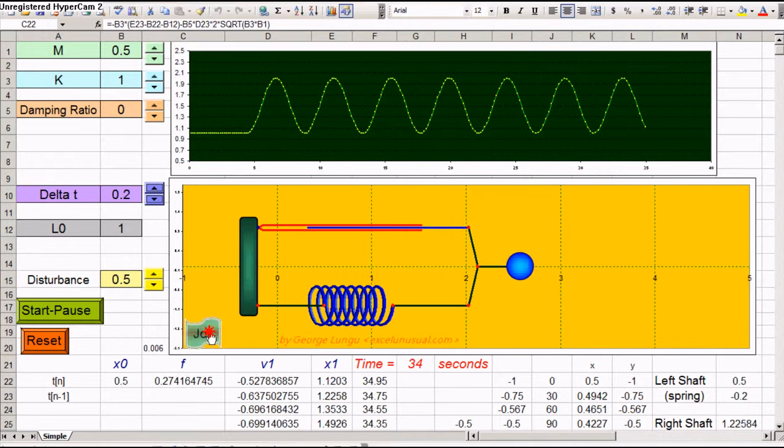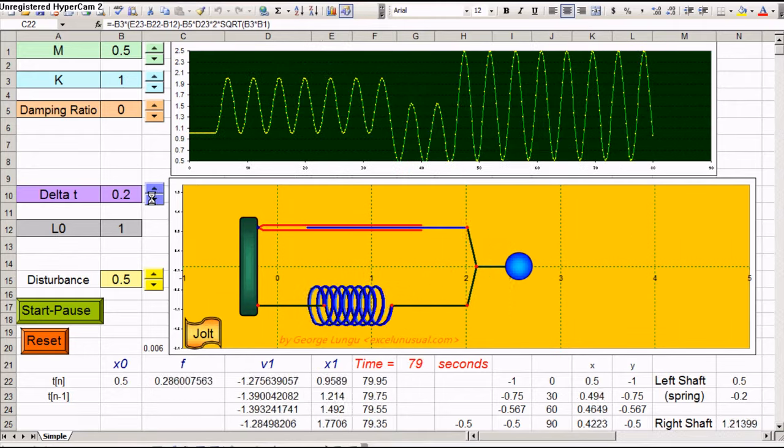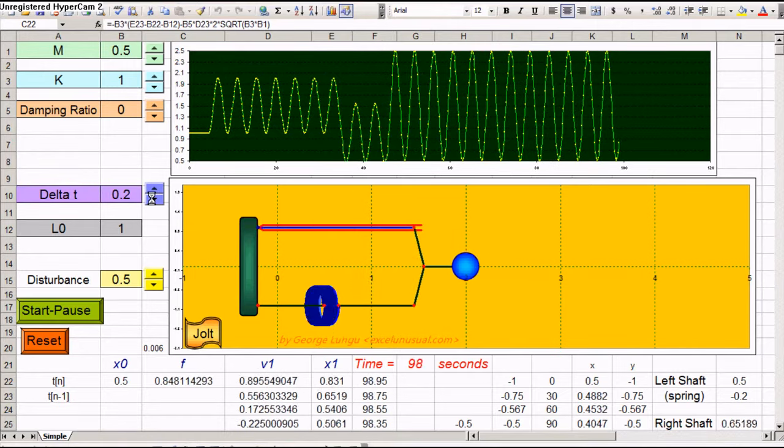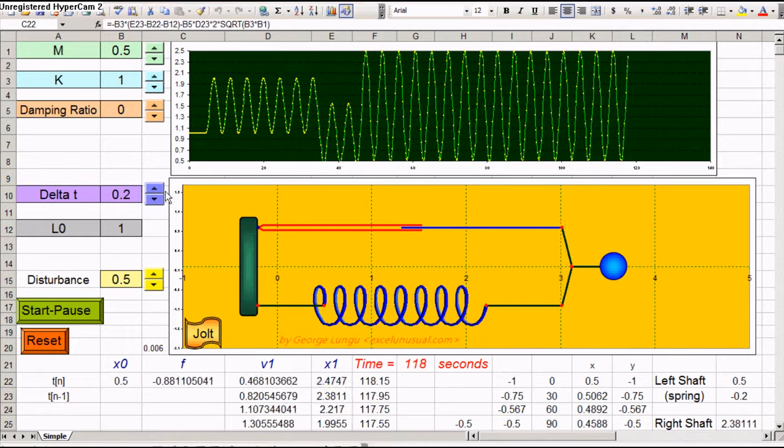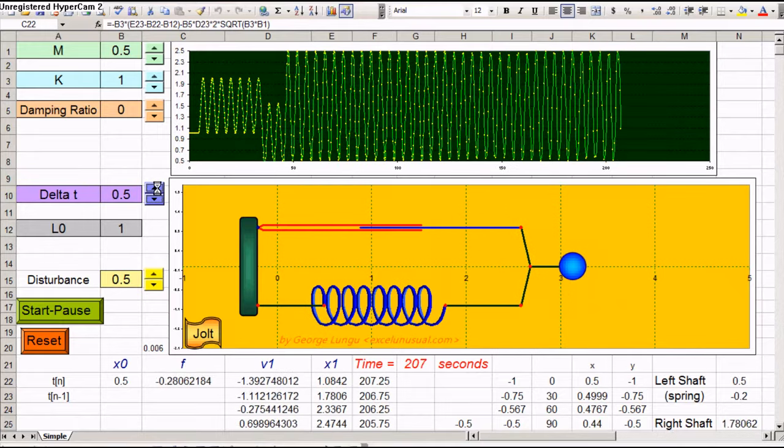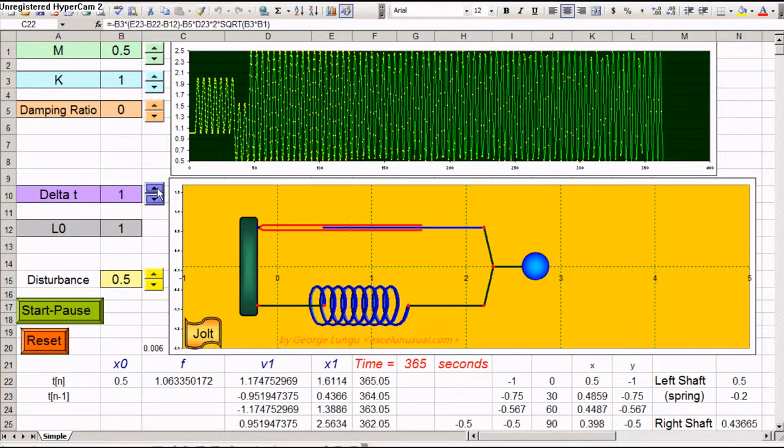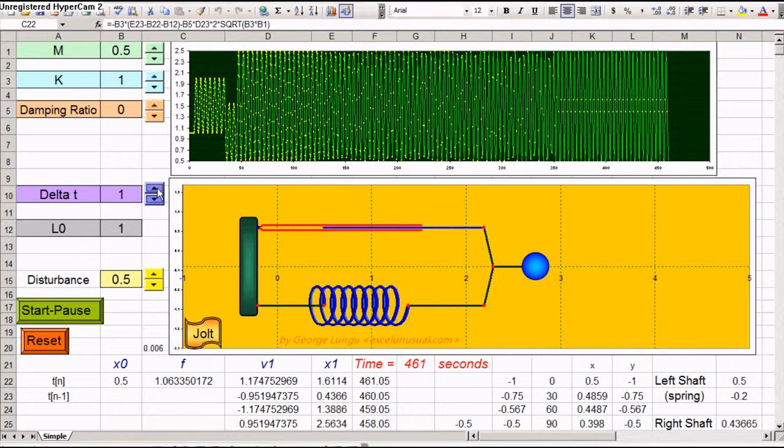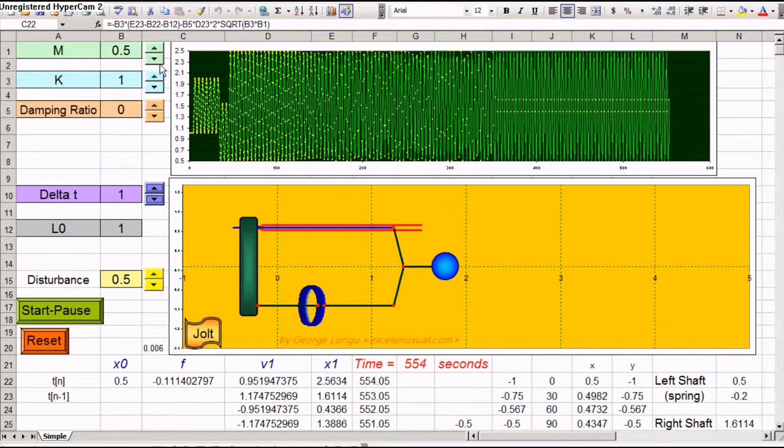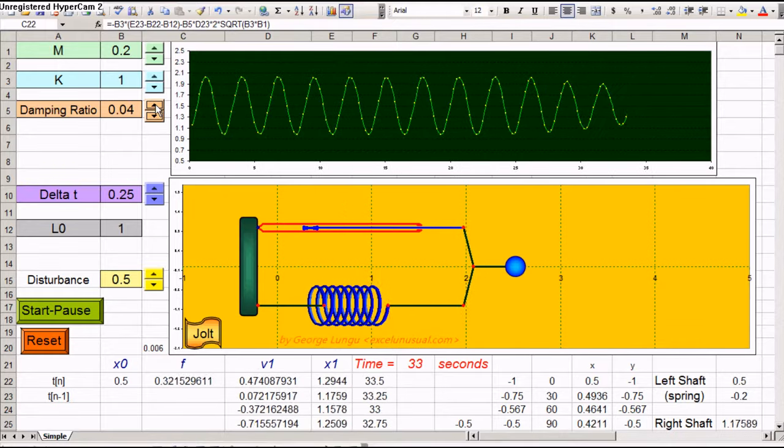We can increase the time step, and the simulation is going to be faster. But we run into the risk of convergence, lack of convergence, if we make it too large. We can see here, if we increase it beyond, say, one second here, it ran out of convergence. We see these very big numbers here. Let's put it back to 0.25 and increase the damping a little bit.